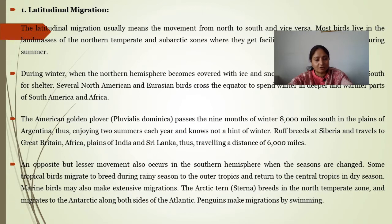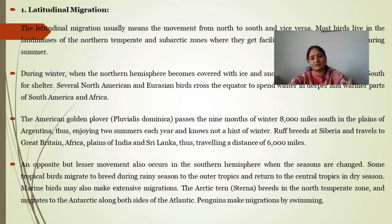Lesser movements also occur in the southern hemisphere, where seasons are changed. Some tropical birds migrate to breed during the rainy season to the outer tropics and return to the central tropics in the dry season. The Arctic tern breeds in the northern temperate zone and migrates to Antarctica along both sides of the Atlantic. Penguins make migration by swimming.